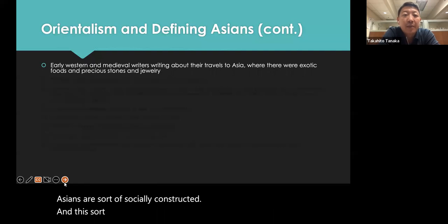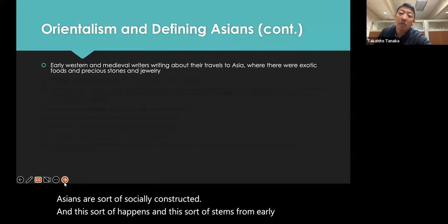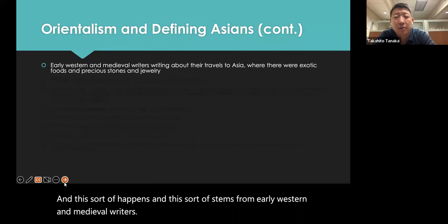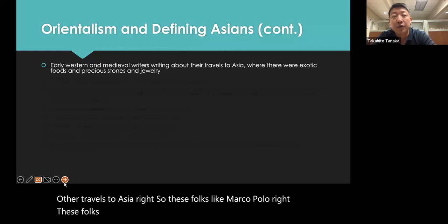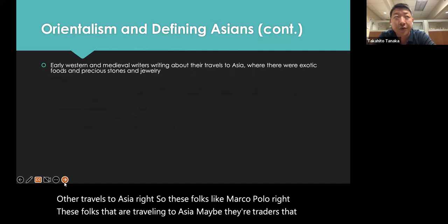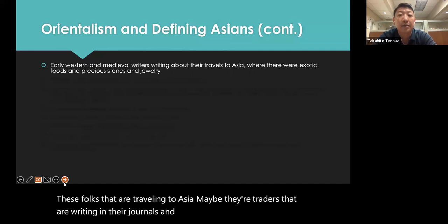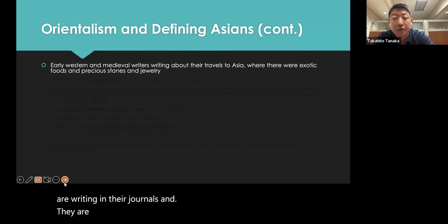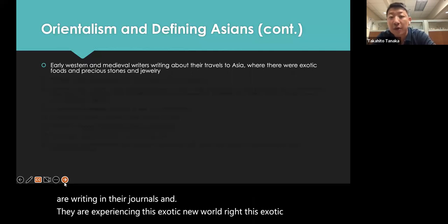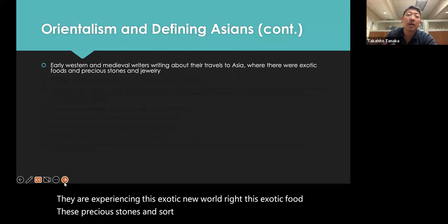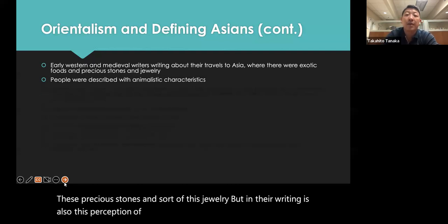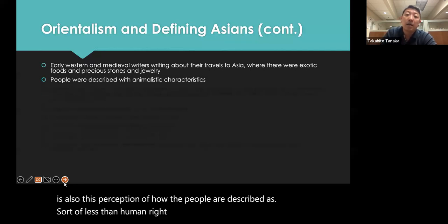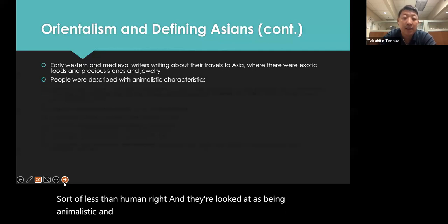This stems from early Western and medieval writers writing about their travels to Asia — folks like Marco Polo, traders writing in their journals, experiencing this exotic new world with its food and precious stones. But in their writing is also this perception of the people as less than human, described as animalistic. Women depicted with boar's tusks, hair down to their heels, oxen's tails growing from their loins — thirteen feet tall, bodies with the whiteness of marble, camel's feet and donkey's teeth.